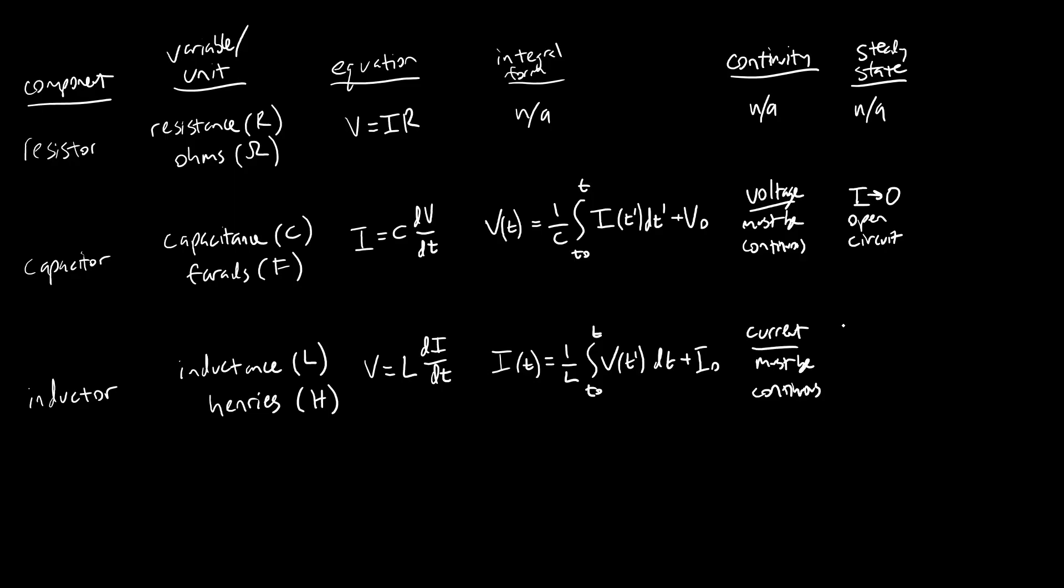And for the inductor in steady state, we have the voltage must be zero. So an inductor in steady state acts like a short circuit. Again, that comes from the equation in steady state if all the derivatives are zero. dI dt equals zero. Therefore, the voltage drop across the inductor is zero.